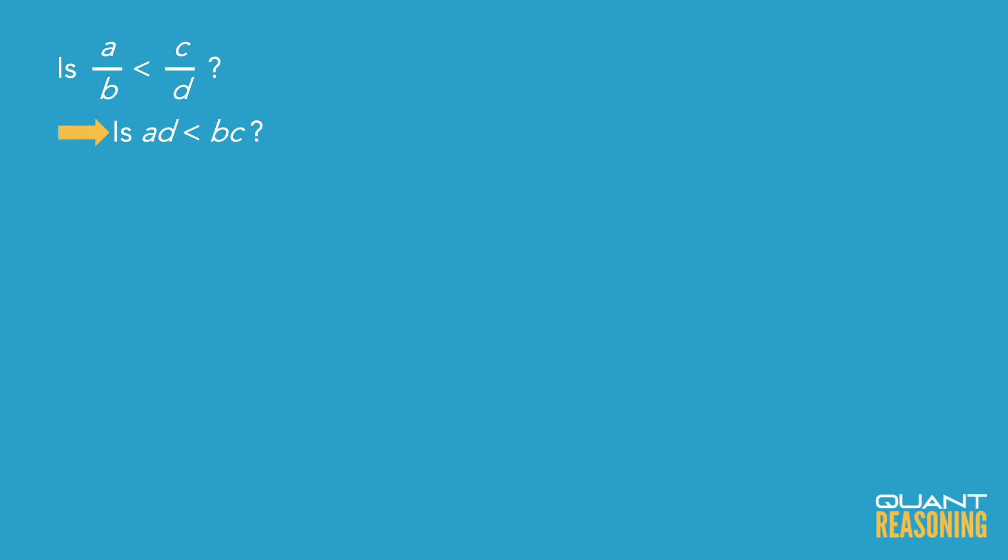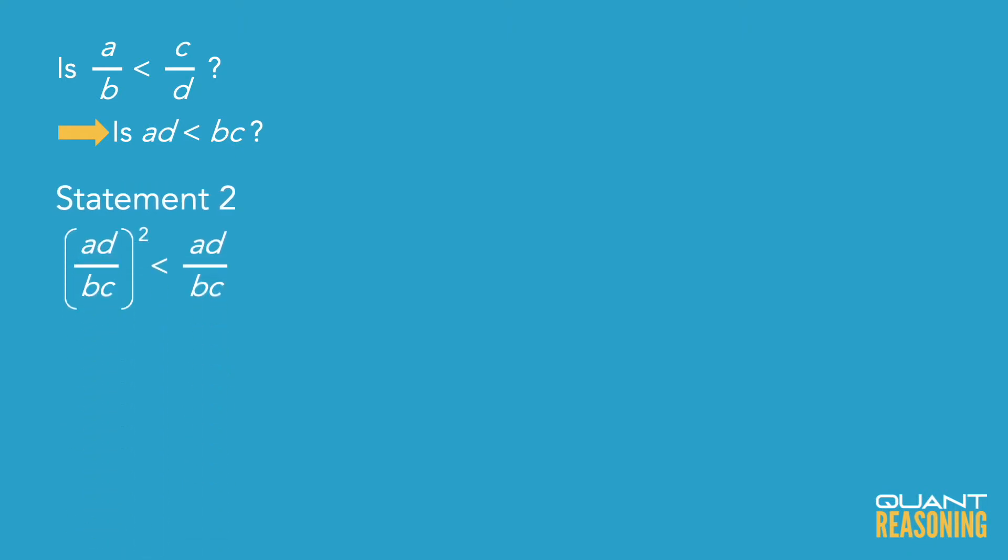Now, if you did do that, you might be tempted to start with statement two because it is talking about AD versus BC. In fact, it's telling us that if you take the ratio of AD to BC and you square it, you get smaller. That's kind of how I interpret statement two. So again, you take AD over BC. When you square it, you become smaller. It brings you closer to 0.